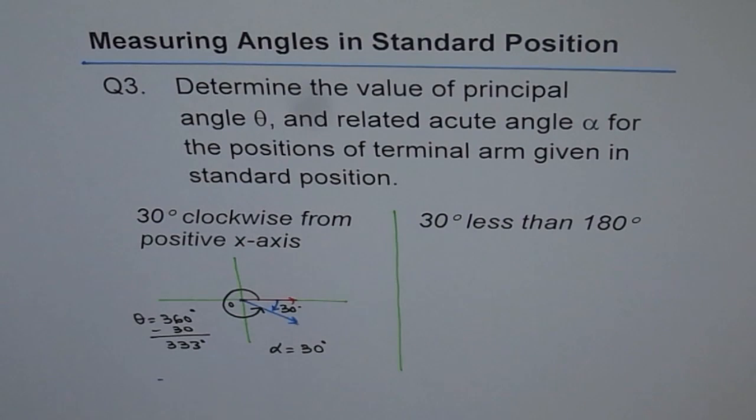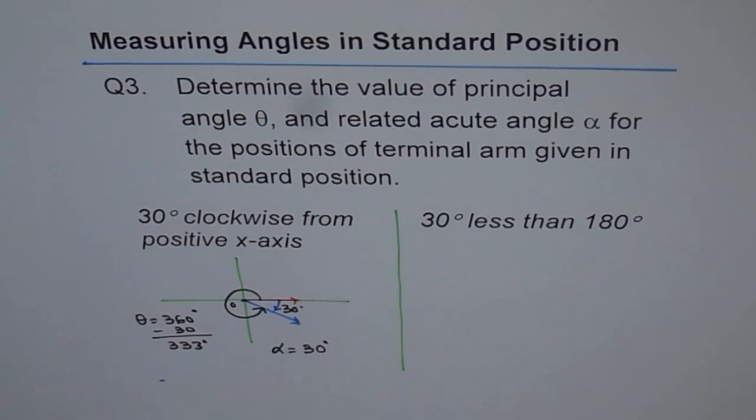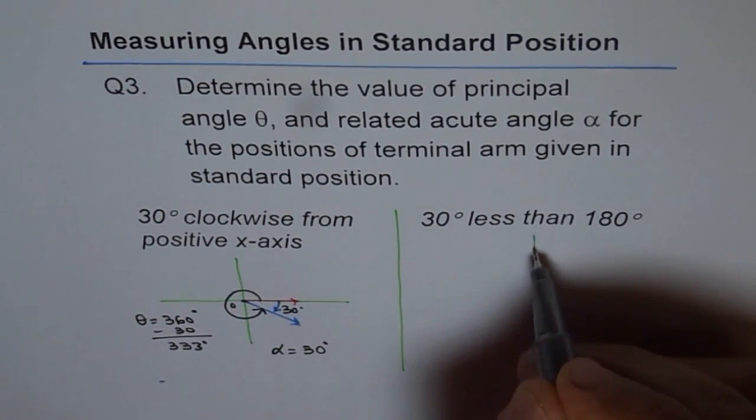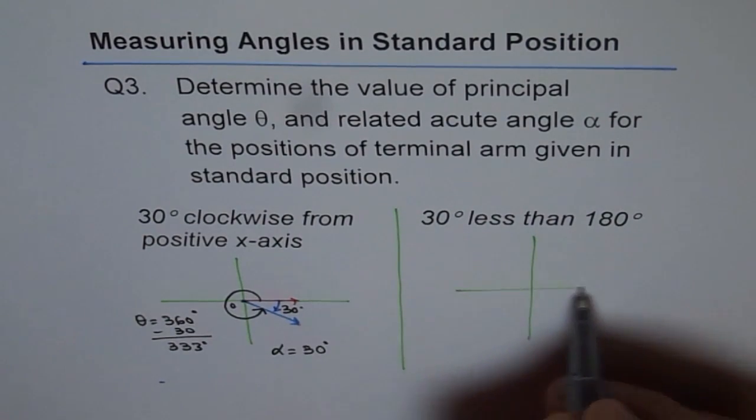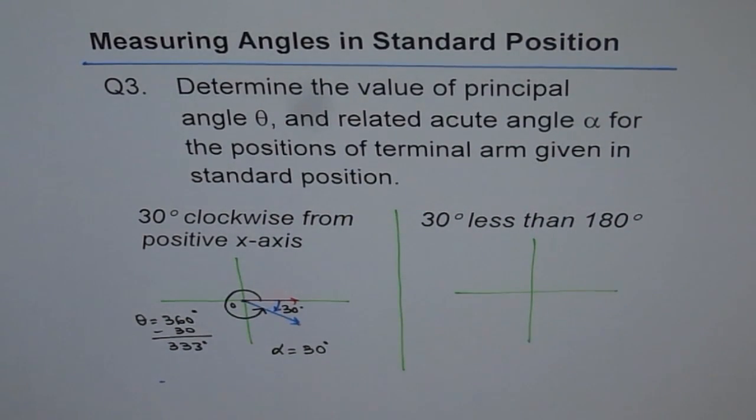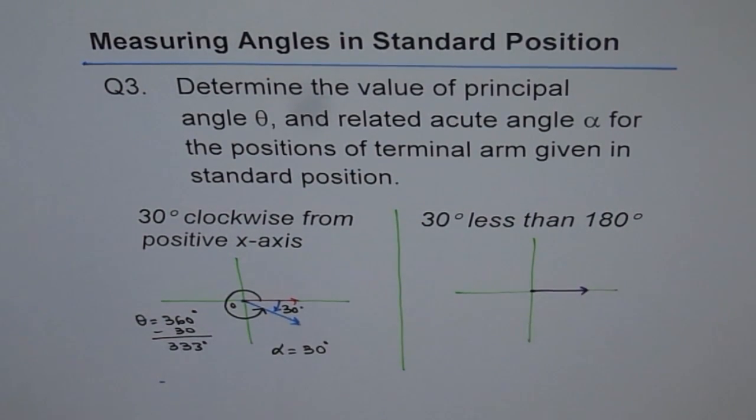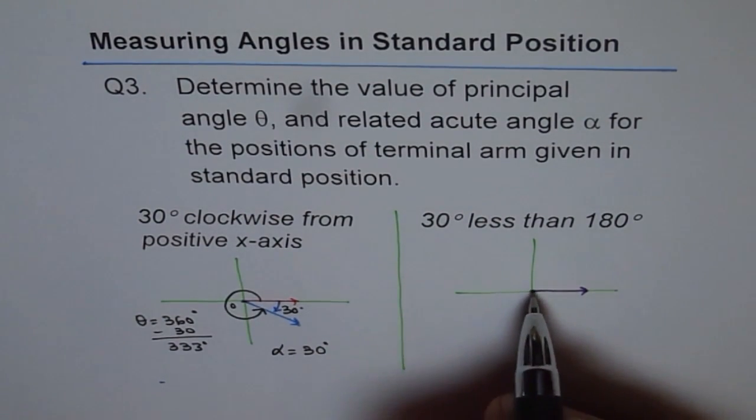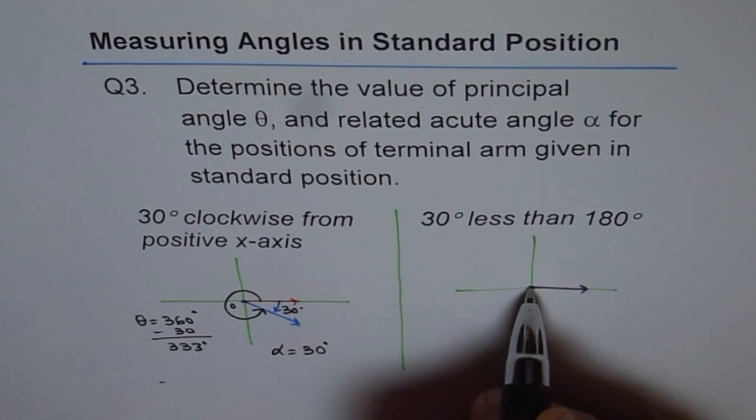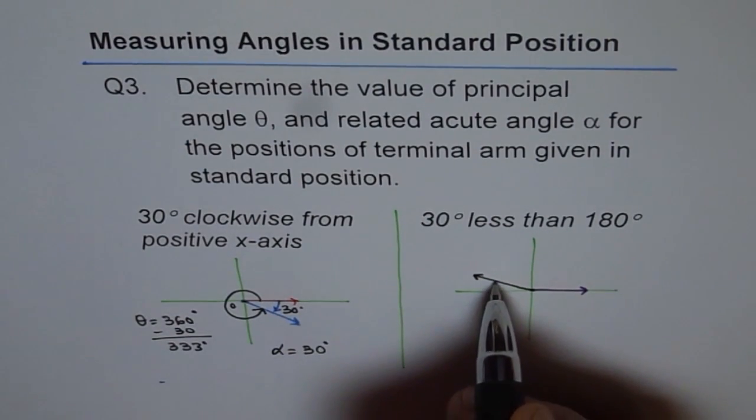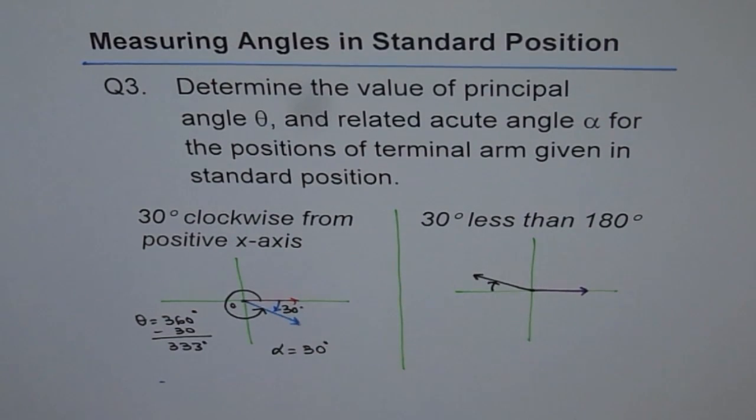Now let's do the second part of it. So standard position. That means coordinate plane. Initial arm from origin to positive x-axis. 30 degrees less than 180. So 30 degrees less than 180 means this is 180. So that means we are somewhere here. And that angle happens to be 30 degrees.